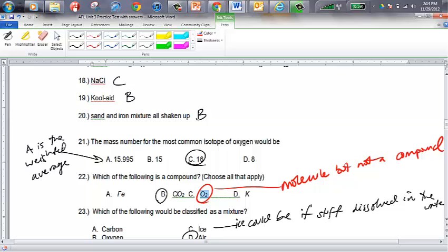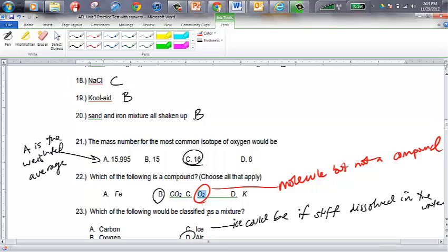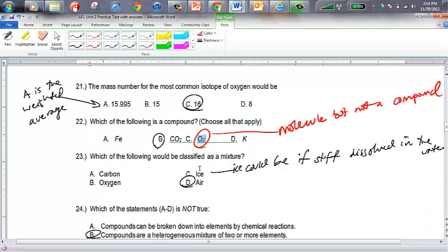CO2 is a compound. It's also a molecule, but it's a compound molecule. O2 is a molecule, but it's not a compound, so O2 is not the answer. Not an answer that would be a compound. The only one that fits for number 22 is letter B CO2.